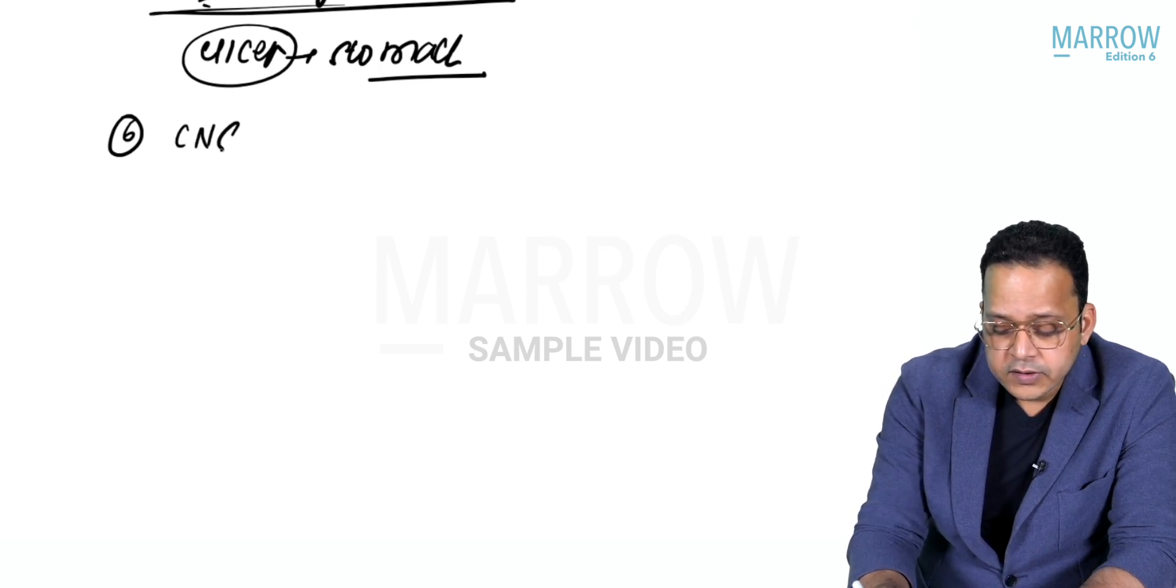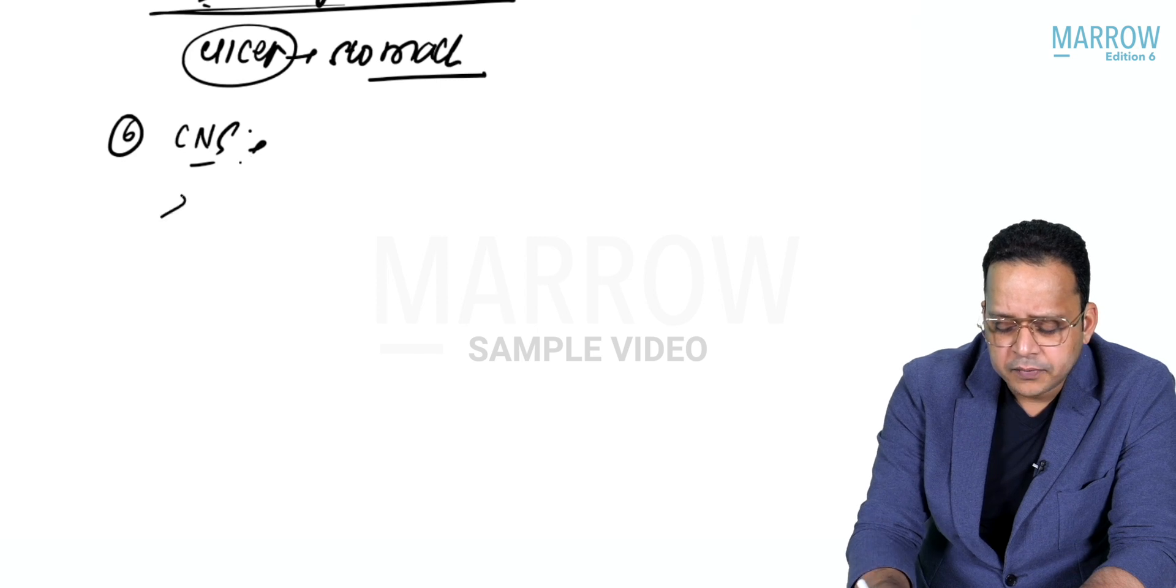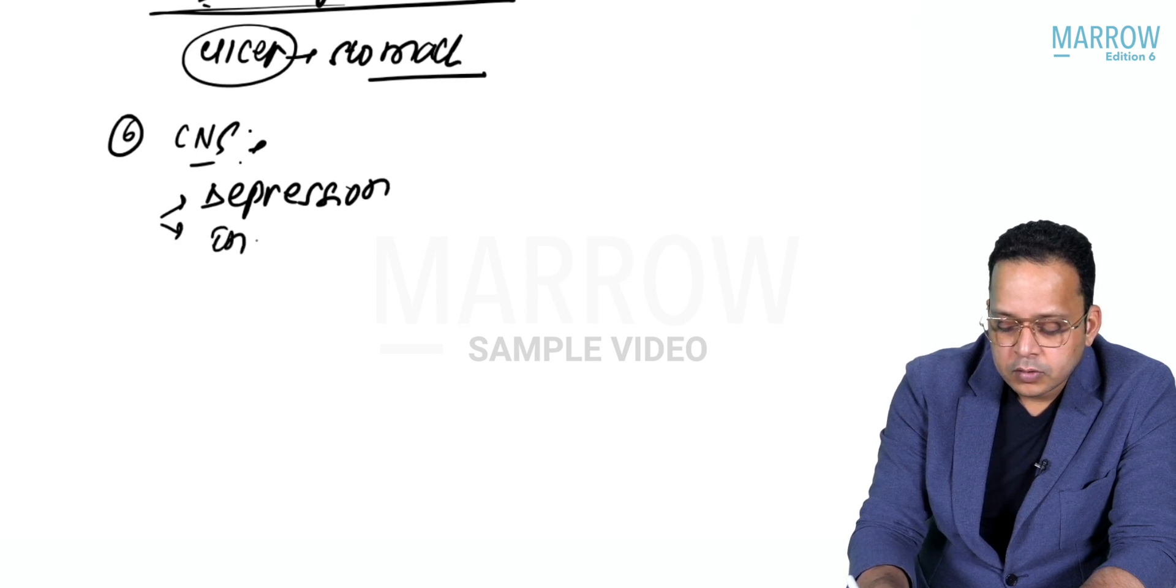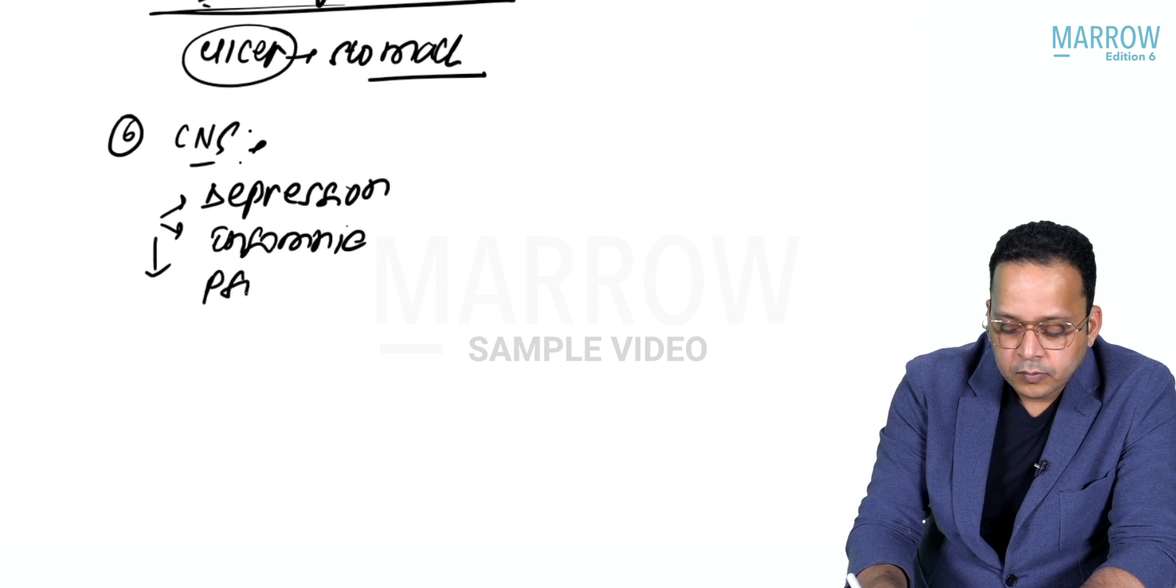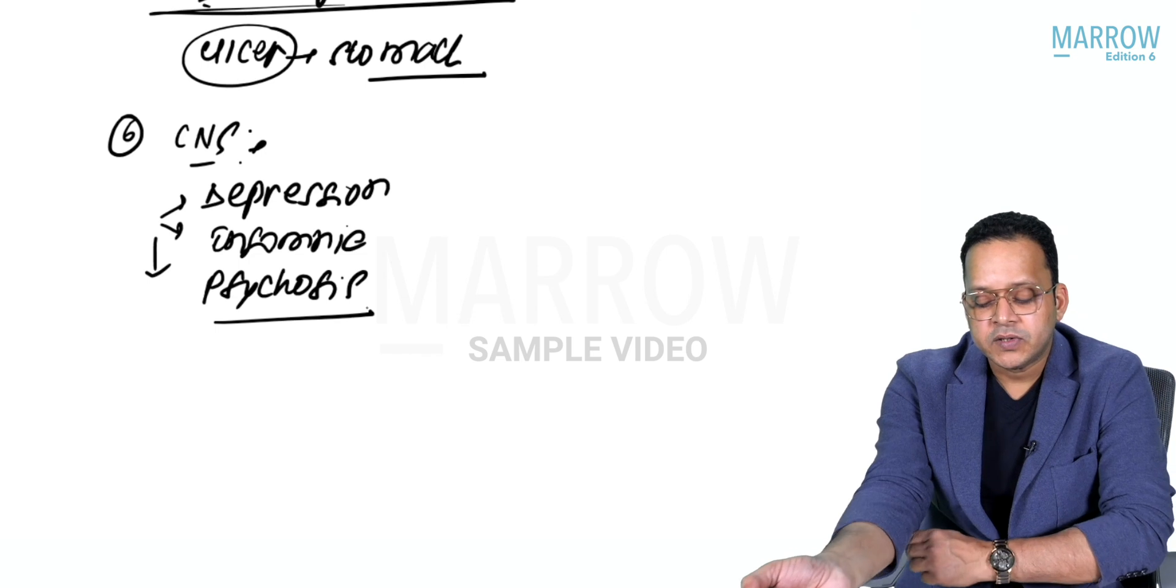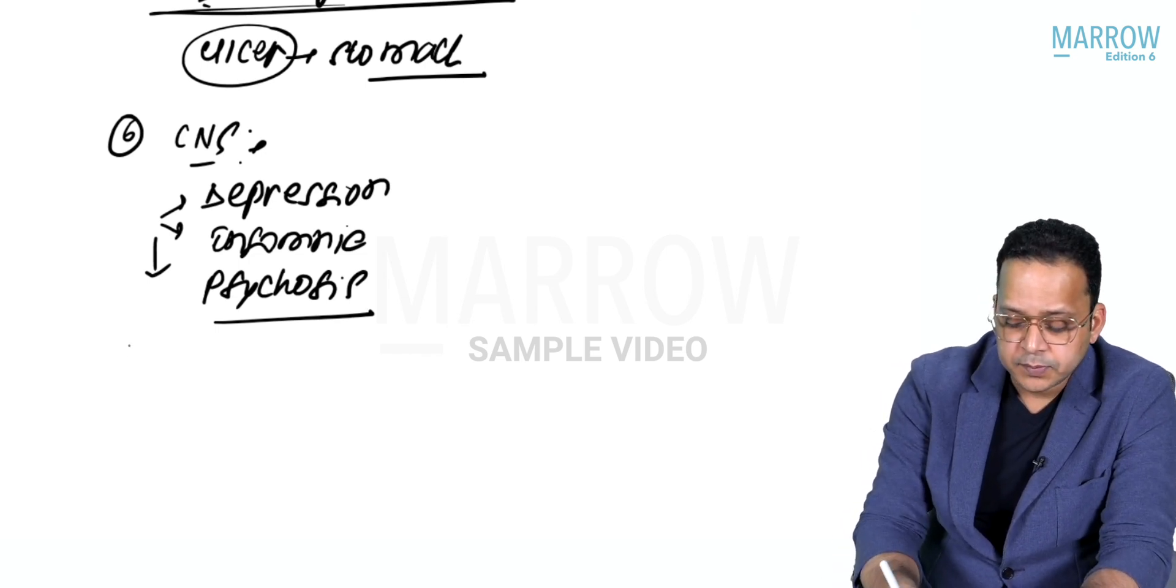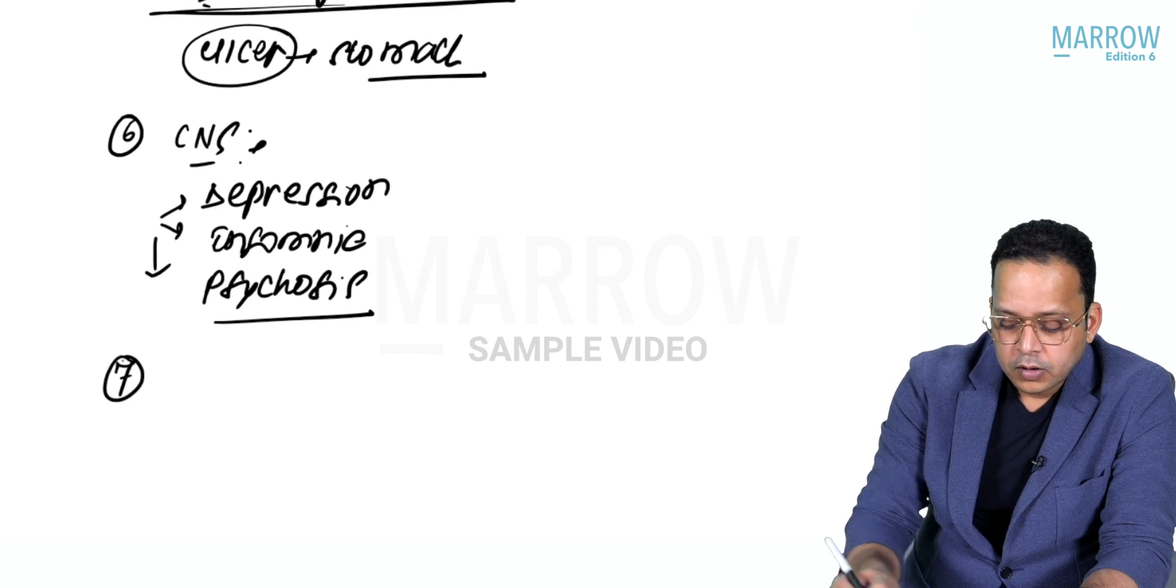What is the effect of steroids on the CNS? They have bad effects - they can cause depression, insomnia, psychosis, etc. because of the reaction on the central nervous system.